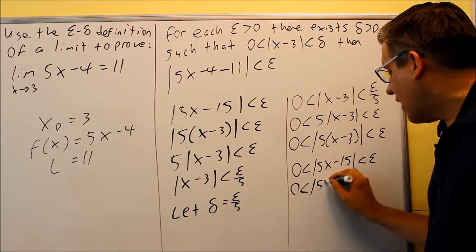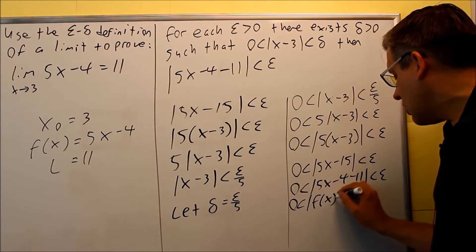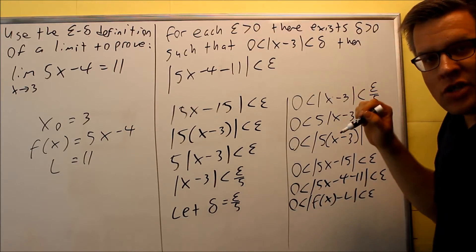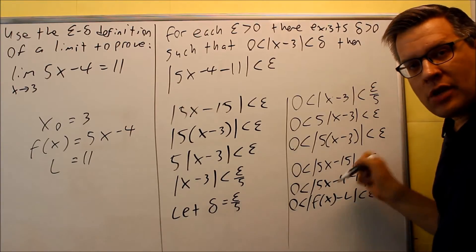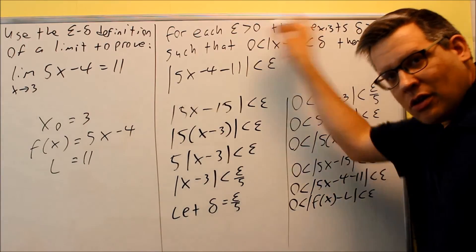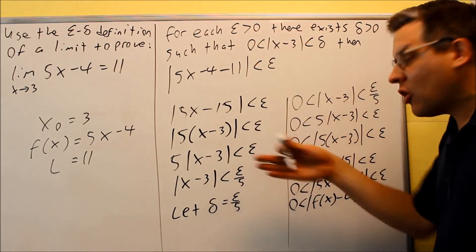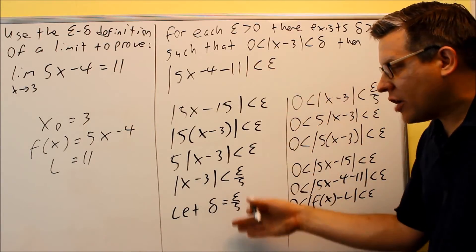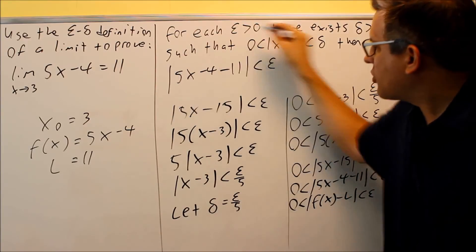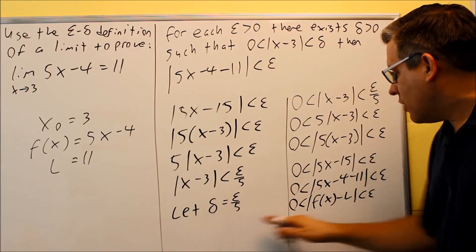The very last step is to rewrite 5x minus 15 as 5x minus 4 minus 11, showing that we have f(x) minus L inside the absolute value, which completes the proof. We now have 0 less than the absolute value of f(x) minus L less than epsilon. So the work you show for this problem is not a numerical answer — it's this entire proof. You're showing both directions: that the x statement implies the epsilon statement and vice versa, and together that gives you the complete proof.